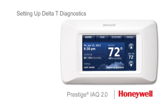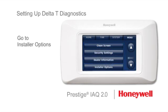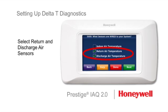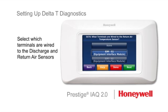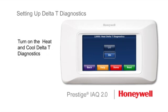To begin the Delta T setup process, go to the installer setup screens on Prestige. The first step is to select the return and discharge air sensors. Step two is to select which terminals are wired to the discharge and return air sensors. The sensors are connected to the S1 and S2 terminals at the equipment interface module. Finally, you'll be prompted by the setup screens to turn on the heat and cool Delta T diagnostics.